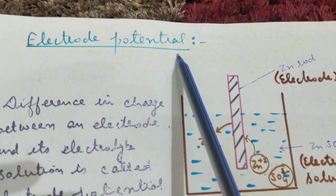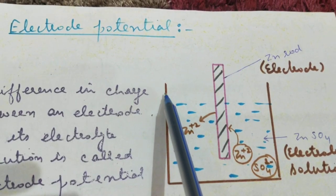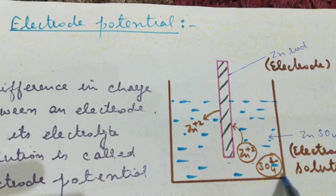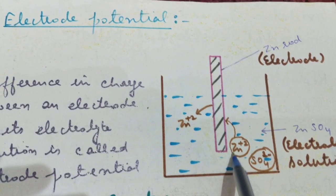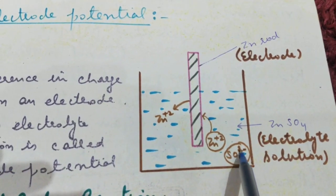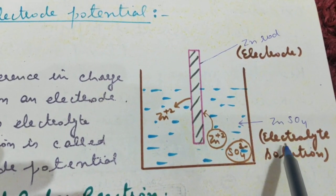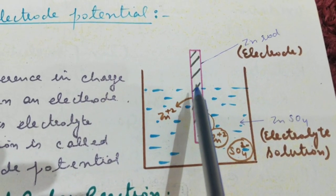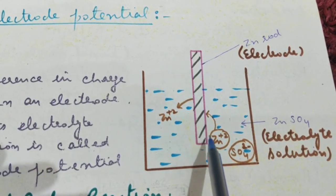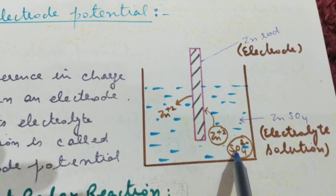Electrode potential. In a container, let us put zinc sulfate solution, which is an electrolyte, by using a zinc electrode. The zinc electrode is put in zinc sulfate solution.